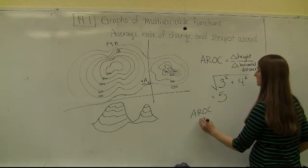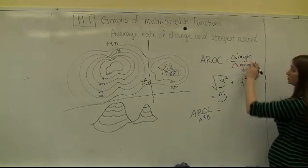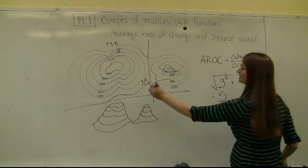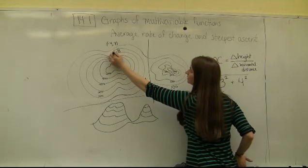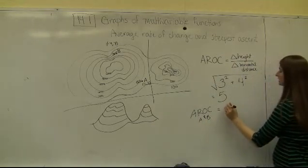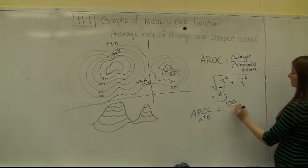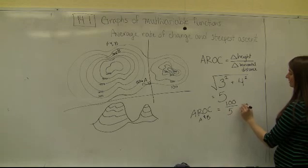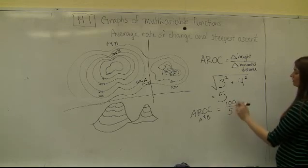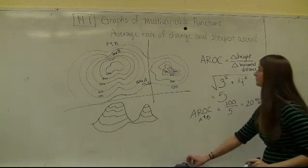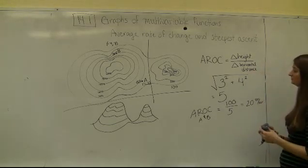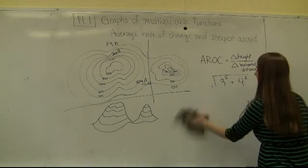So what does that mean in terms of average rate of change? The average rate of change between points A and B is the total change in height — point A at about 180, point B at about 280, giving a vertical displacement of 100 — divided by the horizontal displacement of 5, which gives 20 vertical units per horizontal unit.